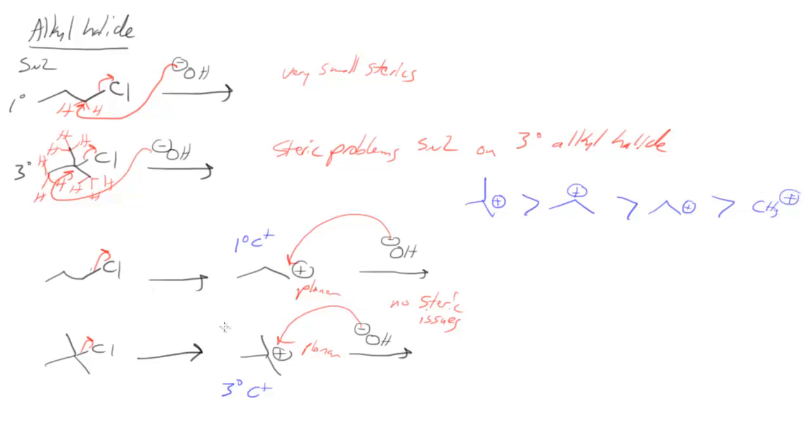So if I look at these two reactions, now this one is going to be favored because it makes a more stable carbocation. While up here, the first one was favored because of very small sterics. So in a primary alkyl halide, it wants to do an SN2 type reaction.